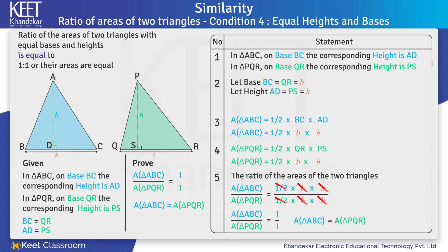Thus, the ratio of the areas of two triangles with equal bases and heights is equal to 1 as to 1, or their areas are equal.